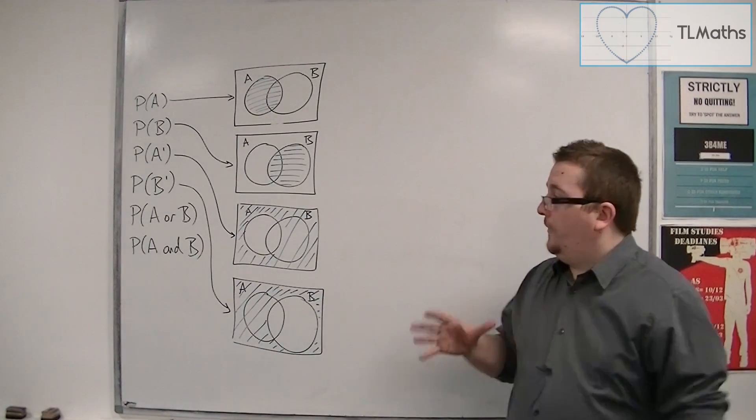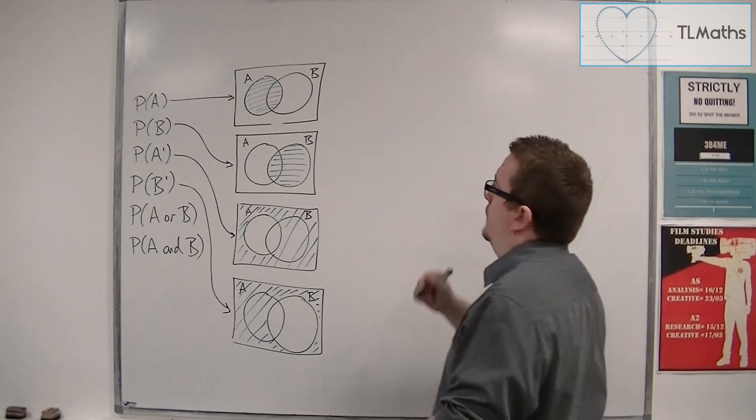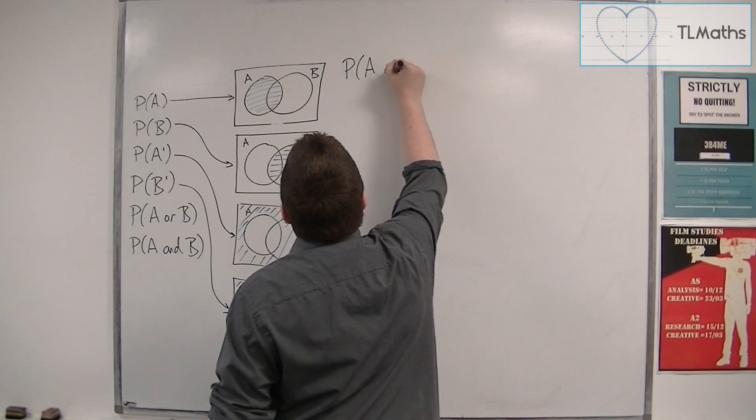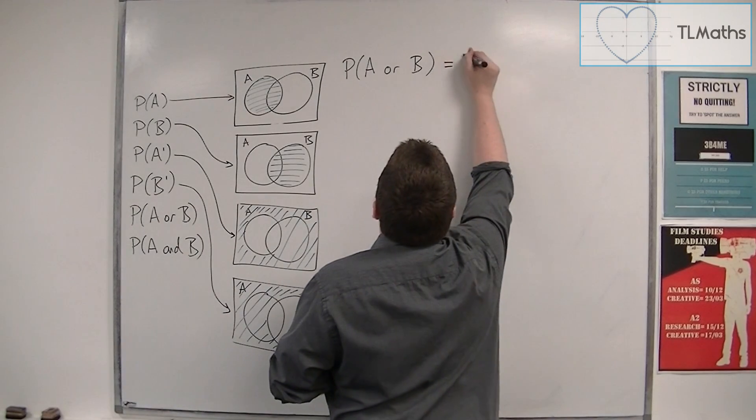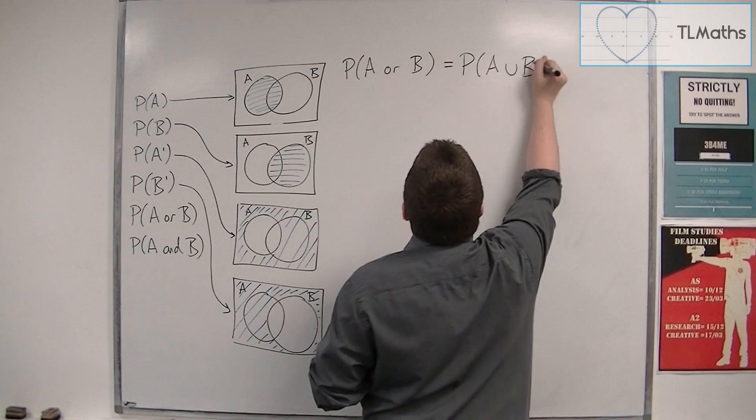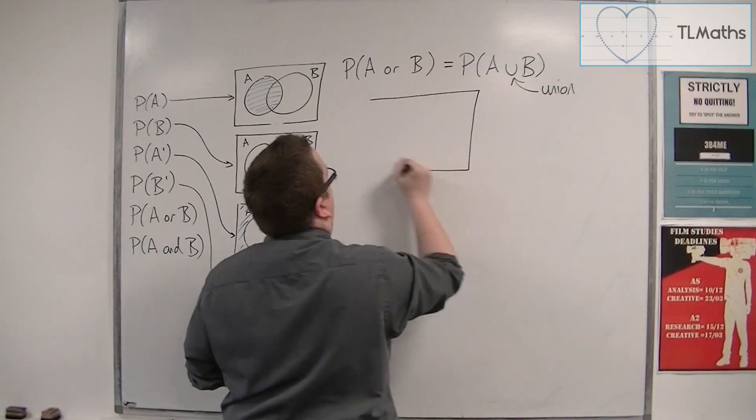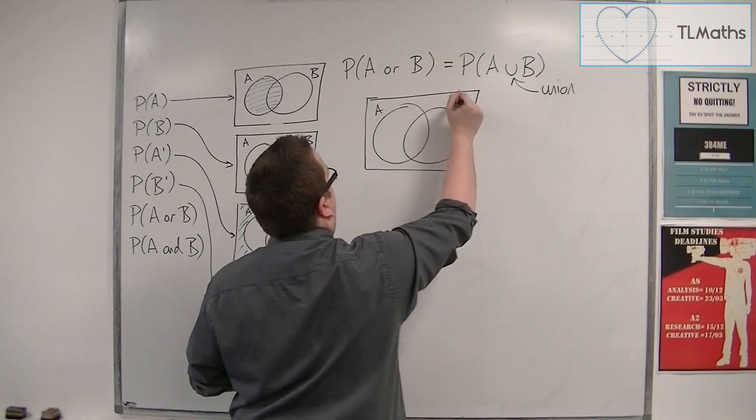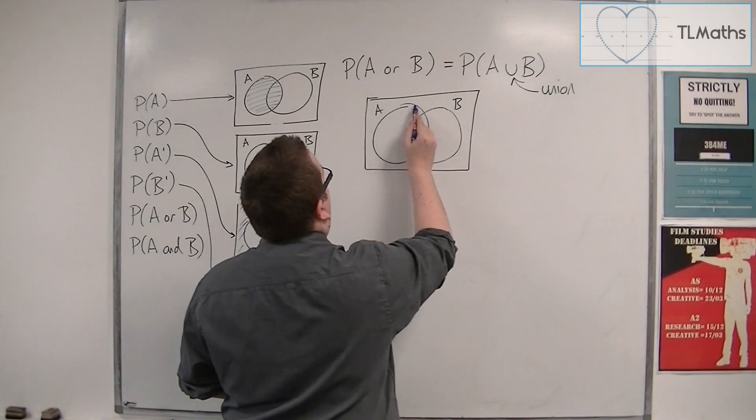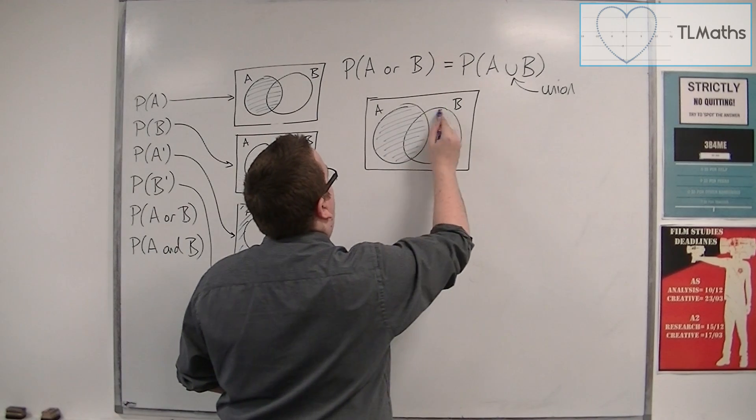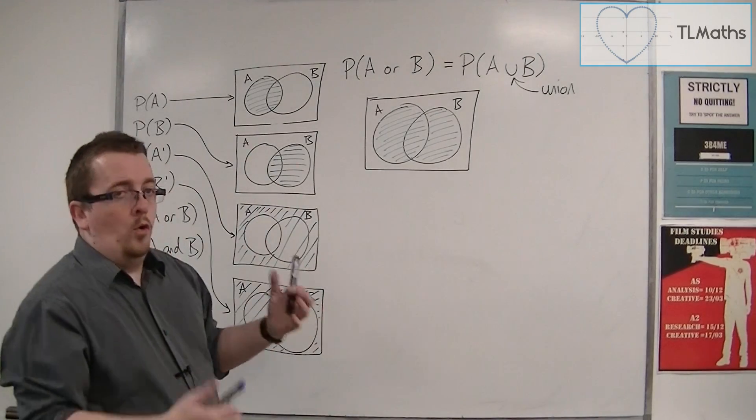So they're kind of like your basic four to start off with. If we're then going to look at the probability of A or B, then we use another form of notation here. And we refer to this as the probability of A union B. So we use this U shape to represent the union. And as a Venn diagram, what this represents is effectively A or B or both. So it's all of A, including the intersection, and all of B.